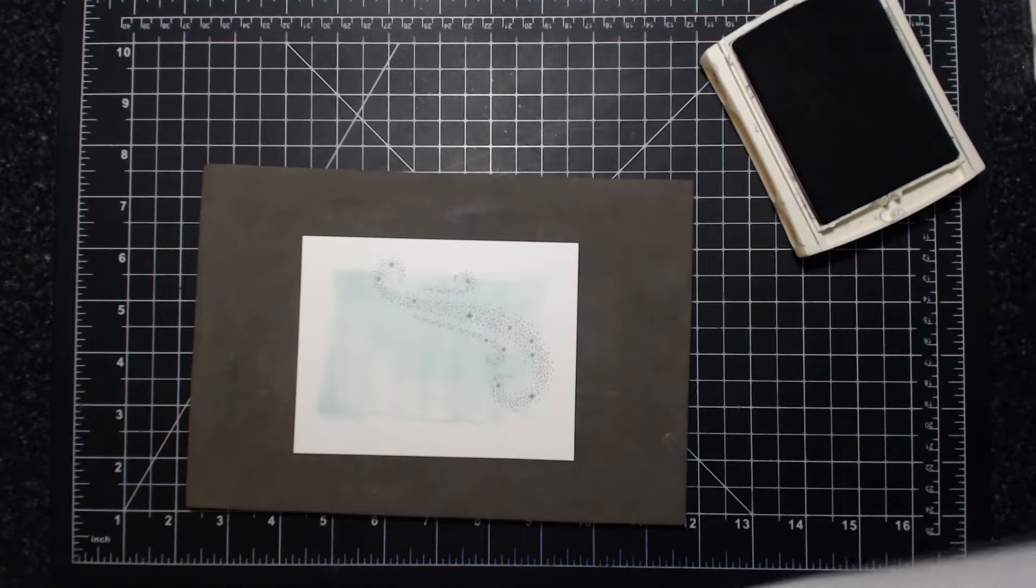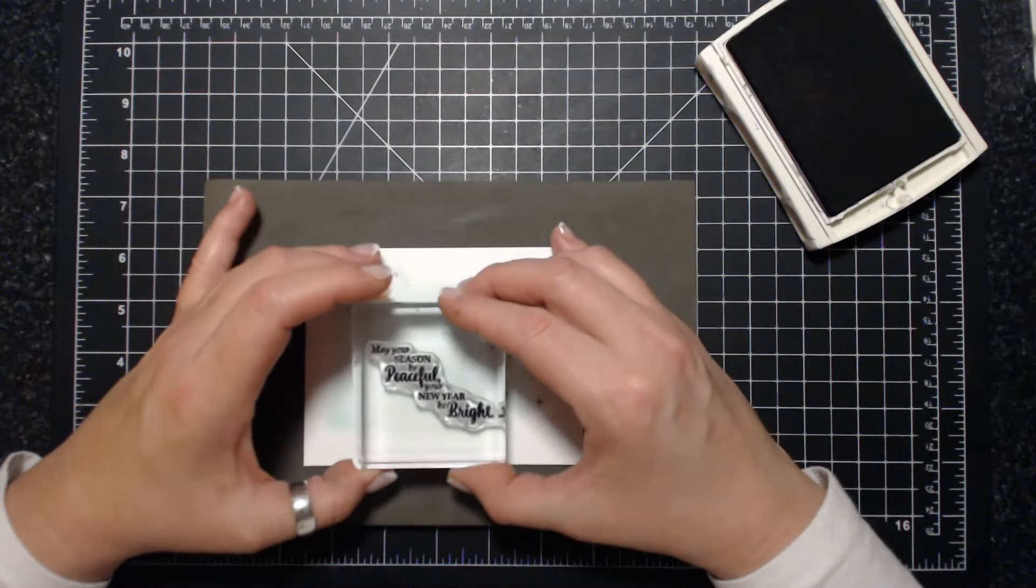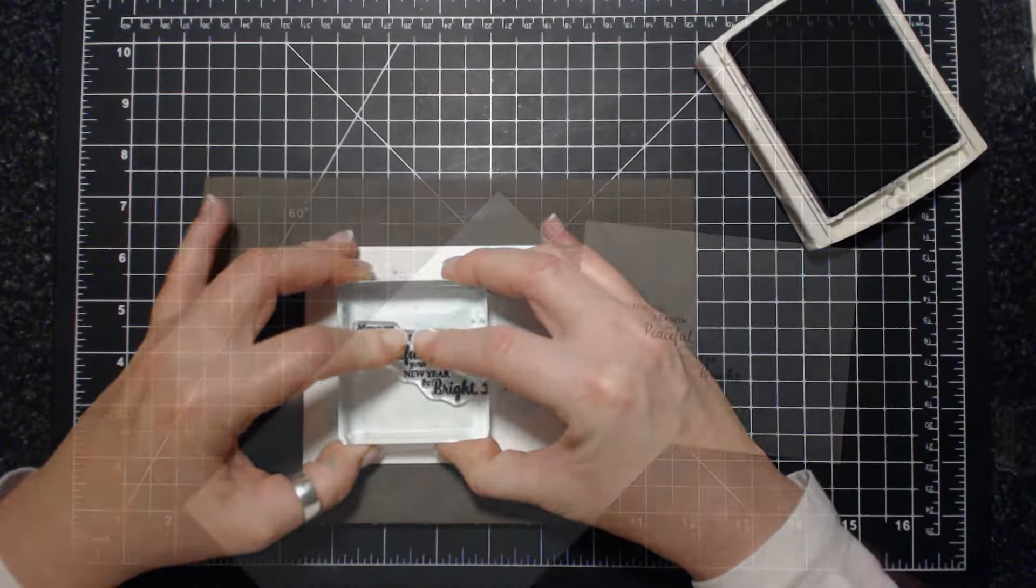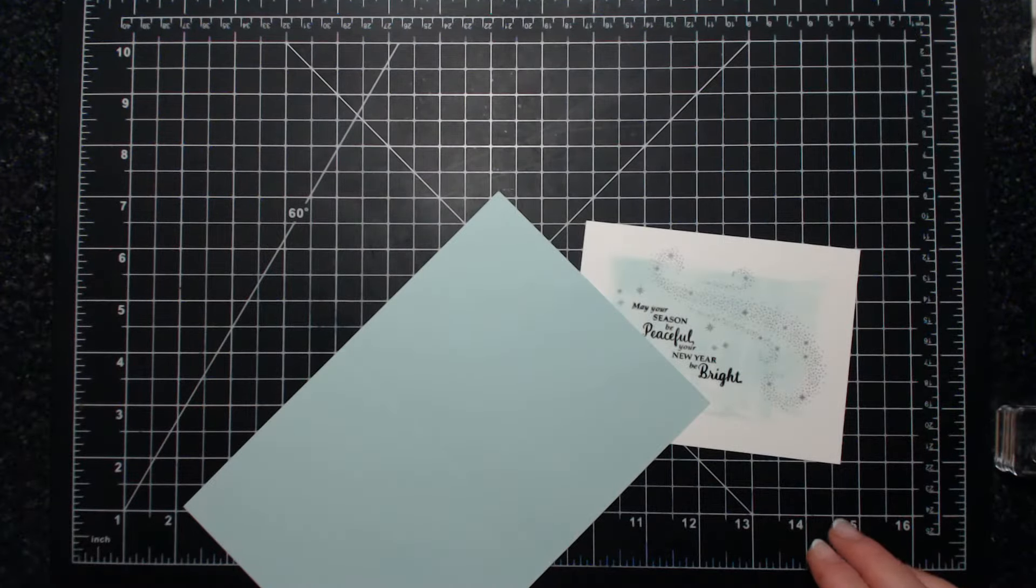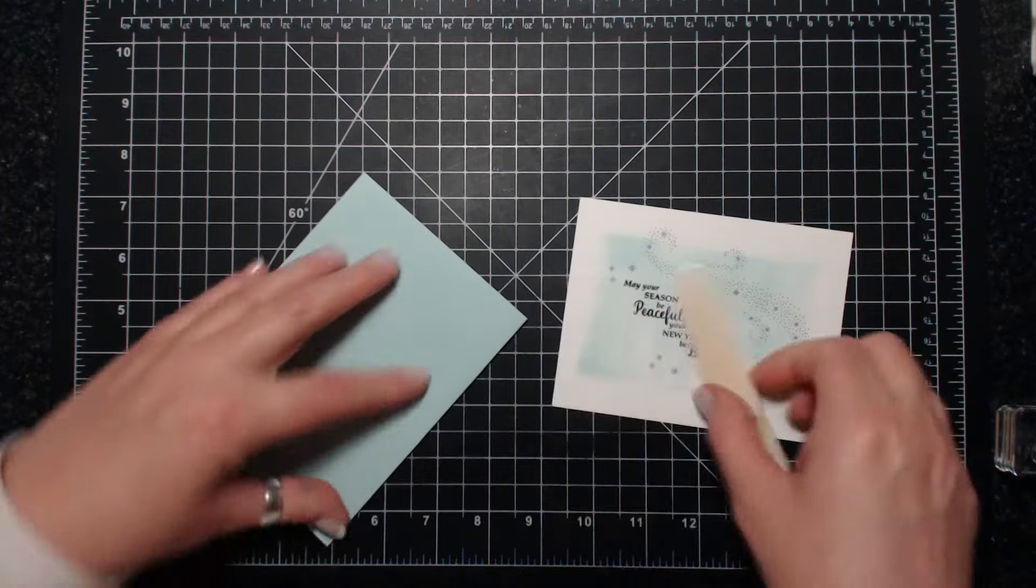The star swooshes are stamped in Wisteria Wonder. My sentiment is stamped with black archival. My card base is soft sky. I just wanted to mention, if you don't have a piercing mat, you may want to get one because it does really help with the photopolymer stamp sets especially.